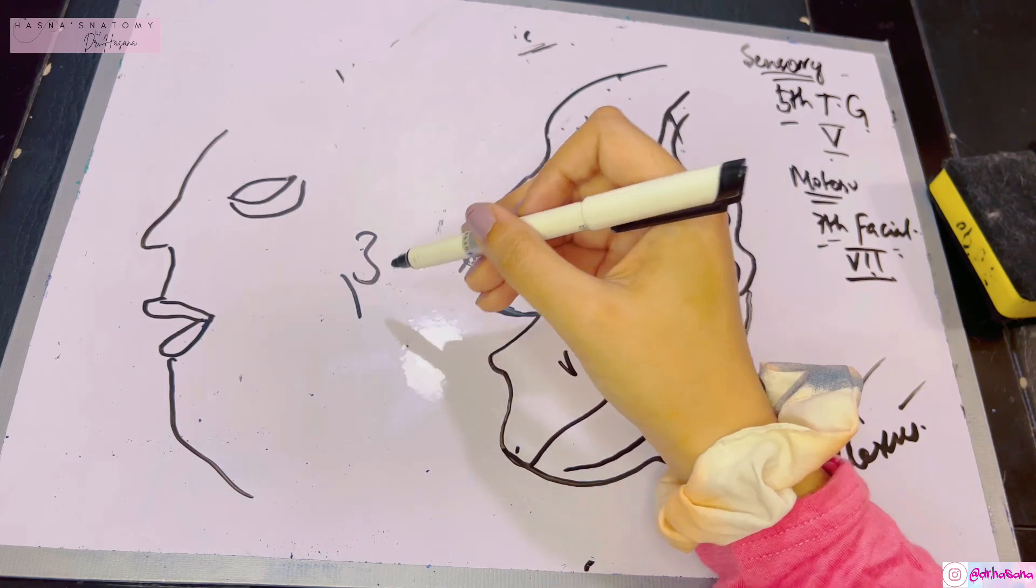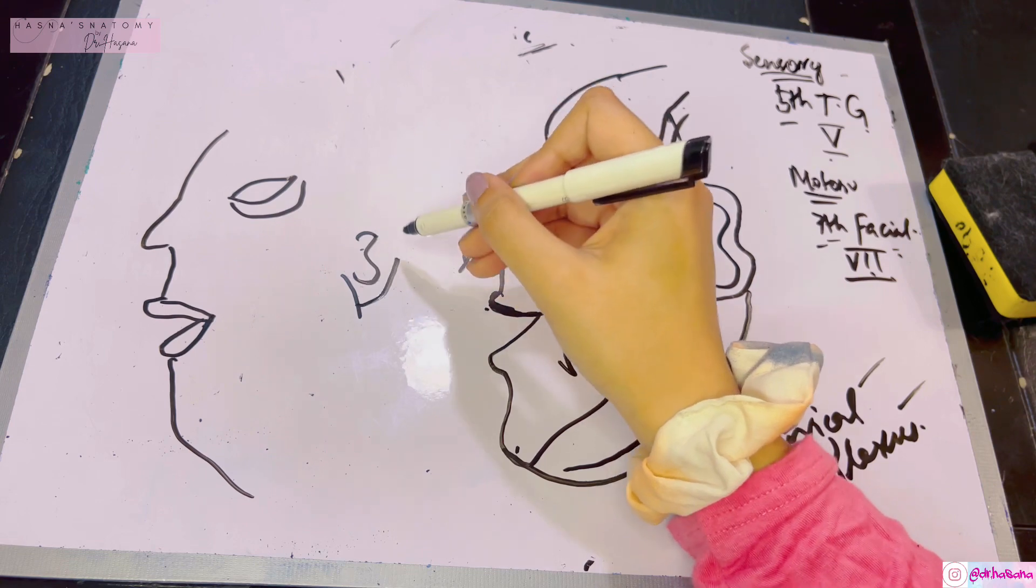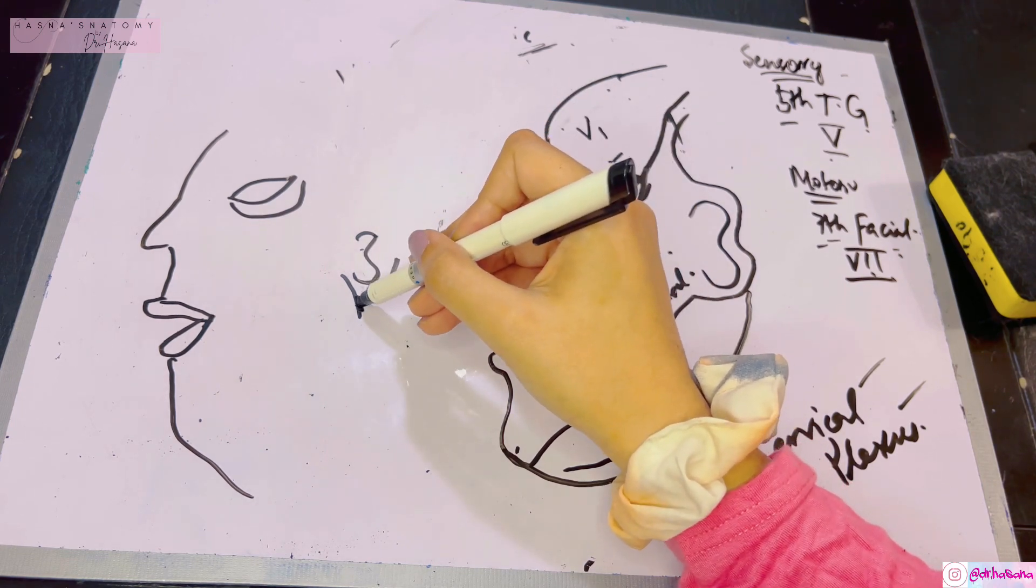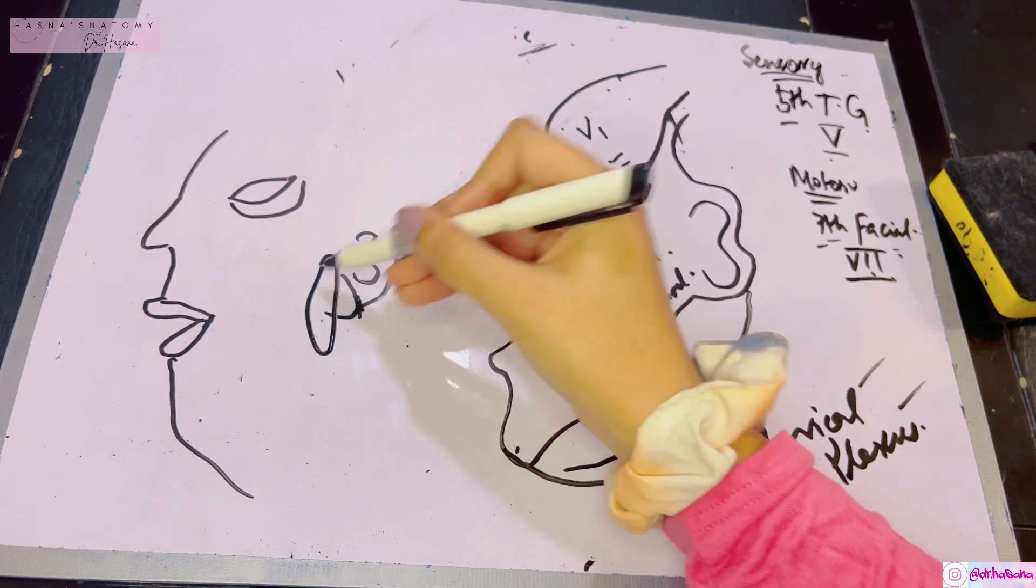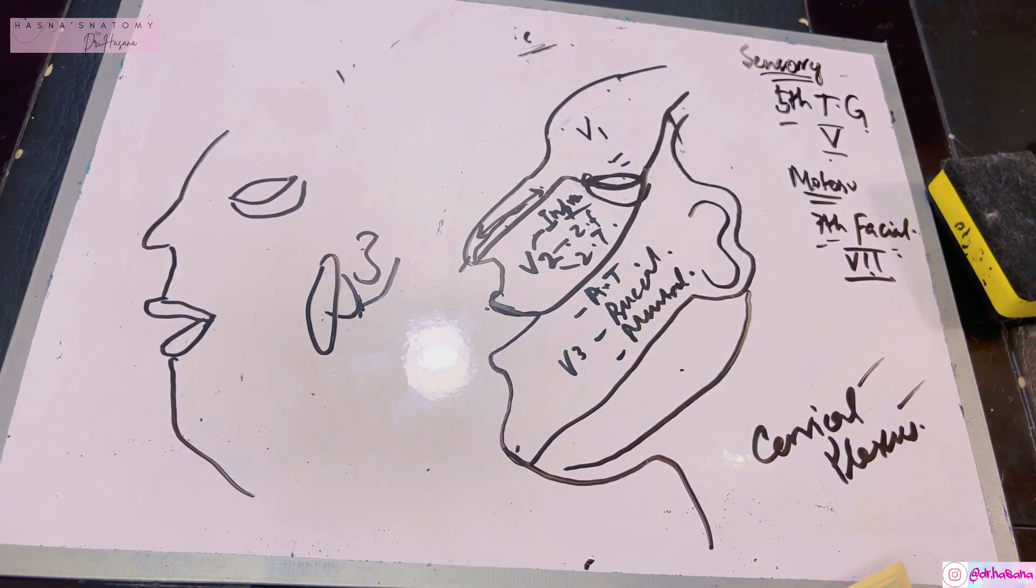The posterior auricular nerve supplies the posterior muscles of the auricle. Once it leaves, it goes into the parotid gland, and within the parotid gland it divides into five branches which supply the face. You can literally put your entire palm on your face and these will be divided.